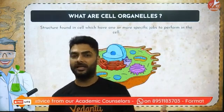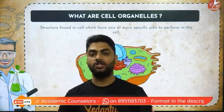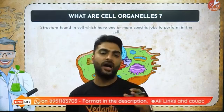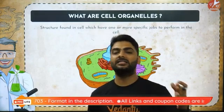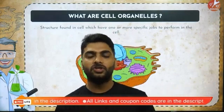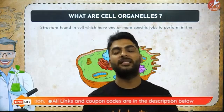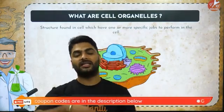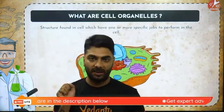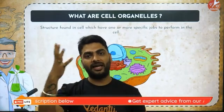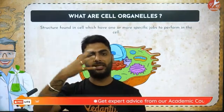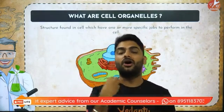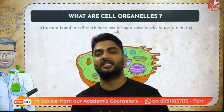First, get the pronunciation right — it is organelles: O-R-G-A-N-E-double L-E. These are the structures found in the cytoplasm, suspended in the cytoplasm, like the vacuole, mitochondria, ribosome, lysosome, and endoplasmic reticulum. These are the organelles suspended in the cytoplasm.